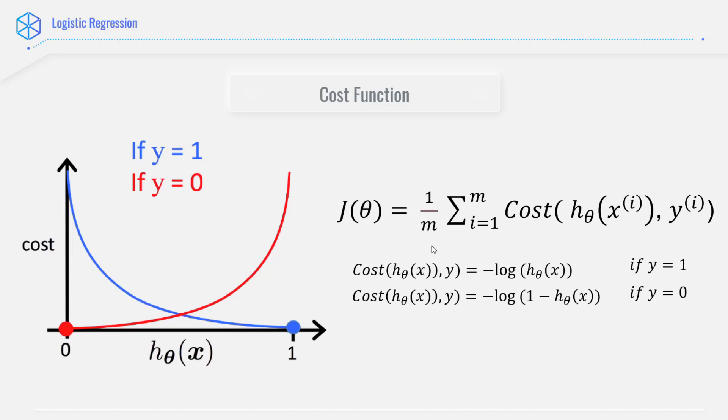Now the benefits of taking the logarithm reveal themselves when you look at the cost function graphs for y equals 0 and y equals 1. These are smooth monotonic functions. That is, they are always increasing or always decreasing. And this in turn makes it easy for us to calculate the gradient and minimize the cost.